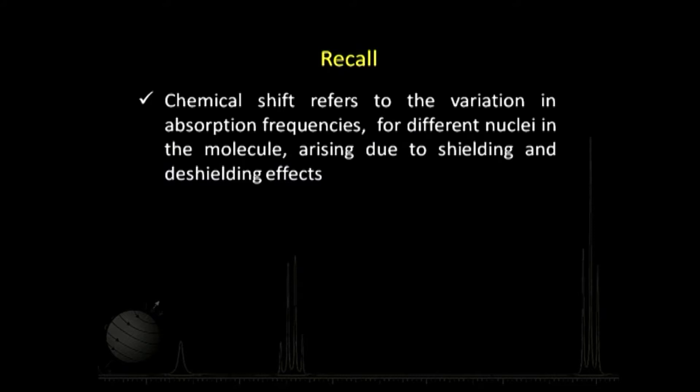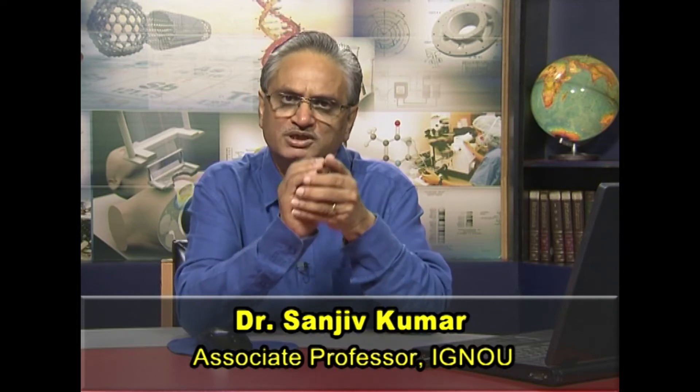Let us recall what we said about chemical shift. Chemical shift basically refers to the variation in absorption frequencies for different nuclei in the molecule, and these arise because of the shielding and deshielding effects. A nucleus absorbs at a certain frequency, and depending on the electronic environment around the nucleus, the frequency at which it absorbs changes. Different neighboring nuclei or atoms affect this, and that is what we are going to take up today.